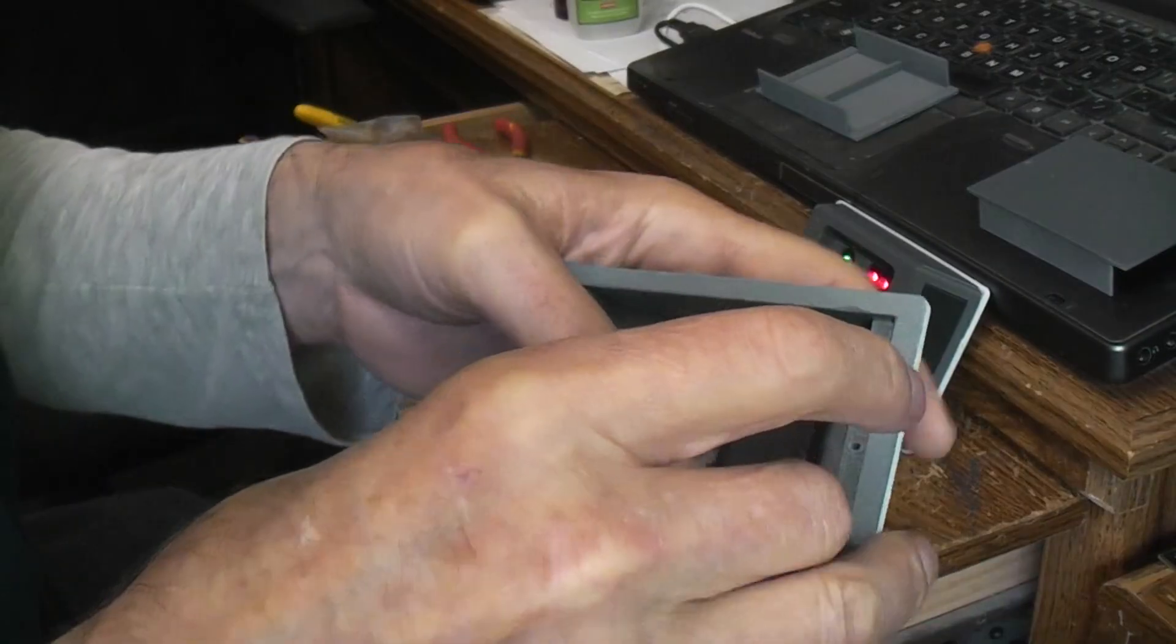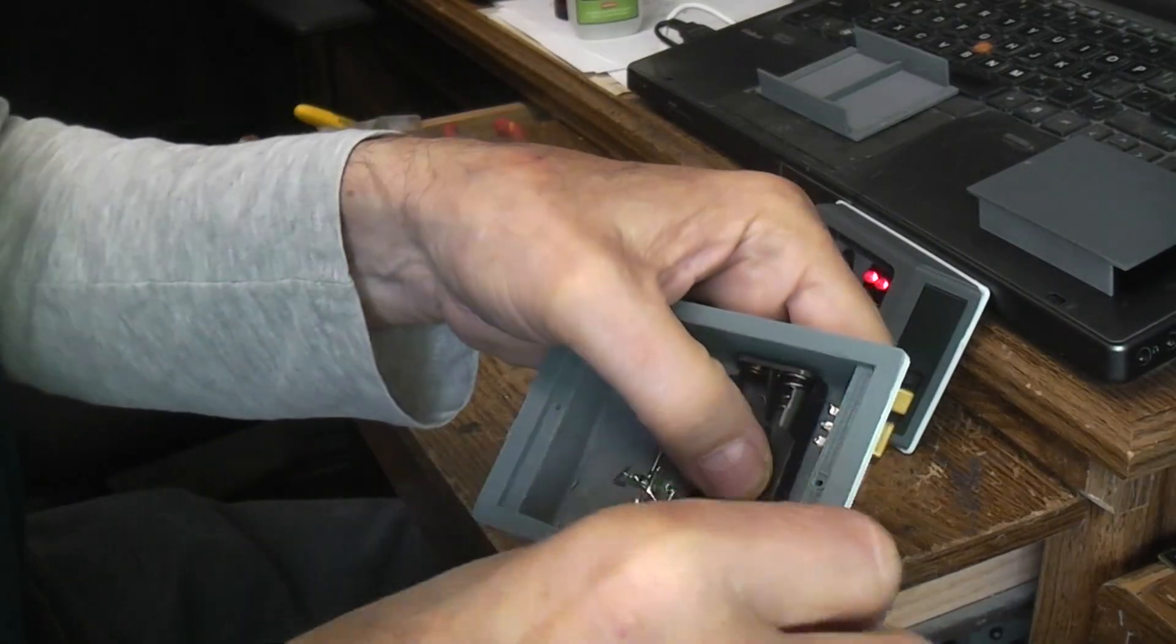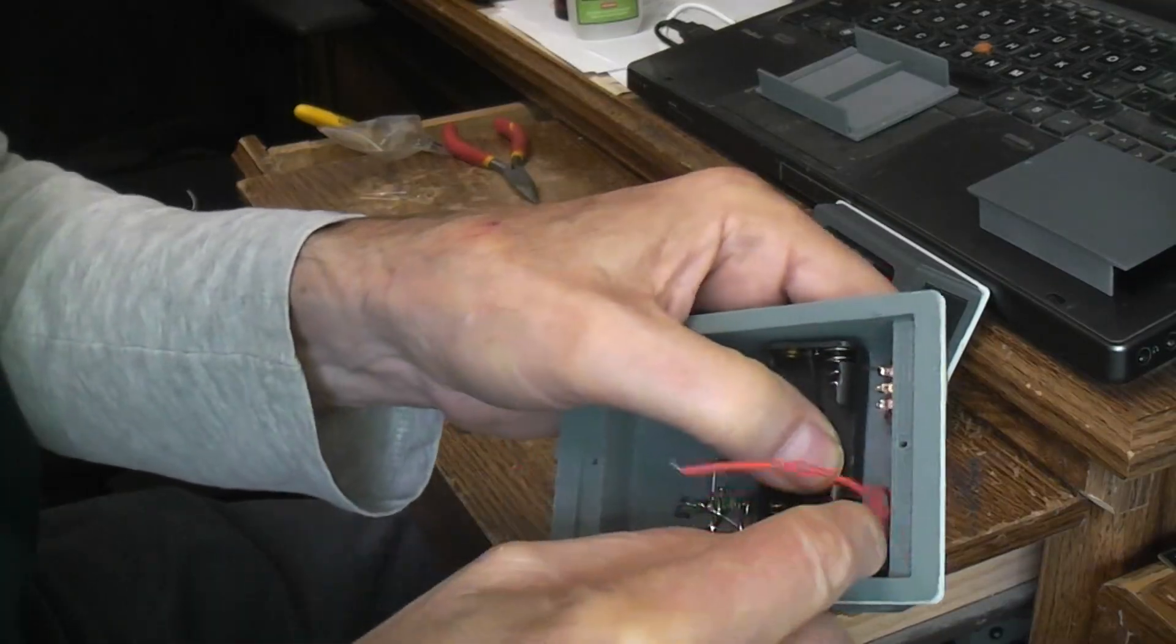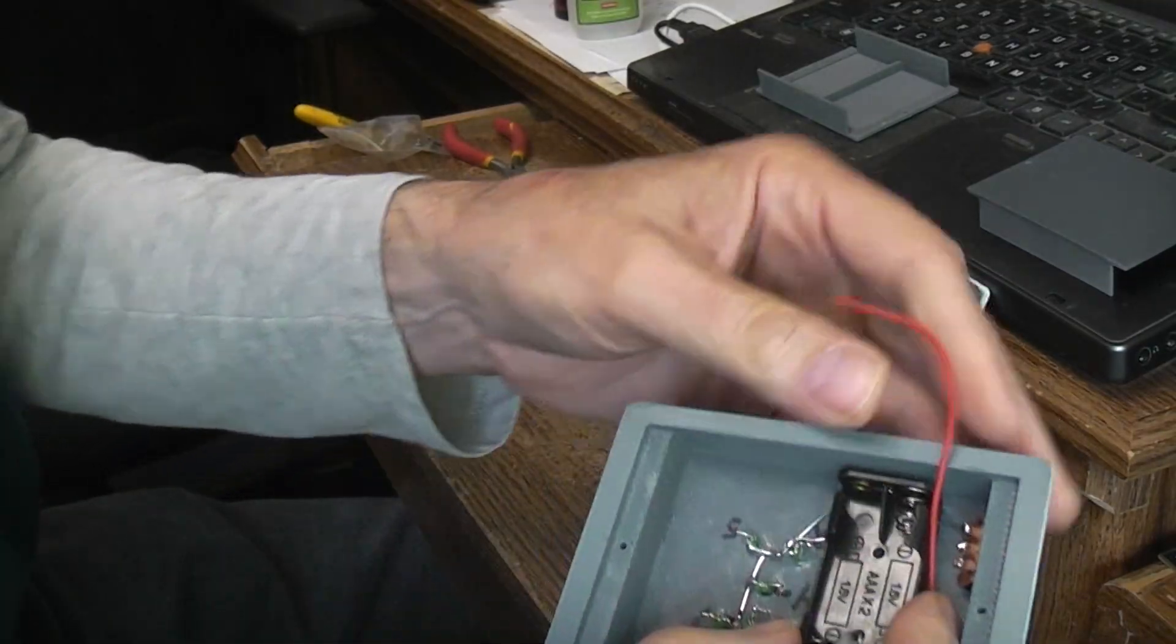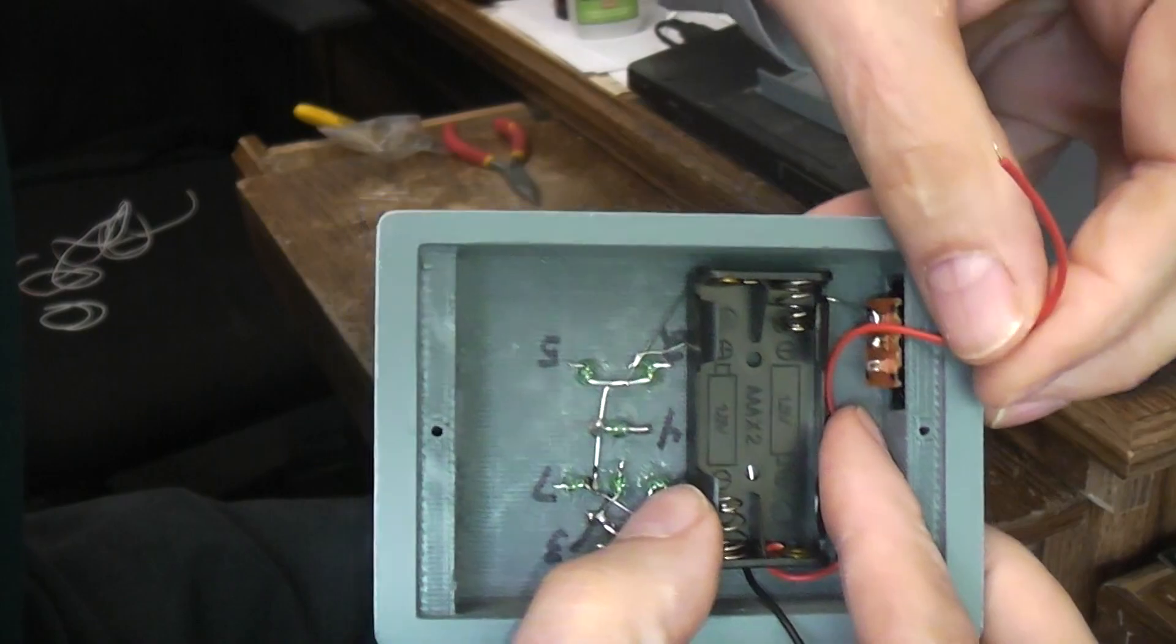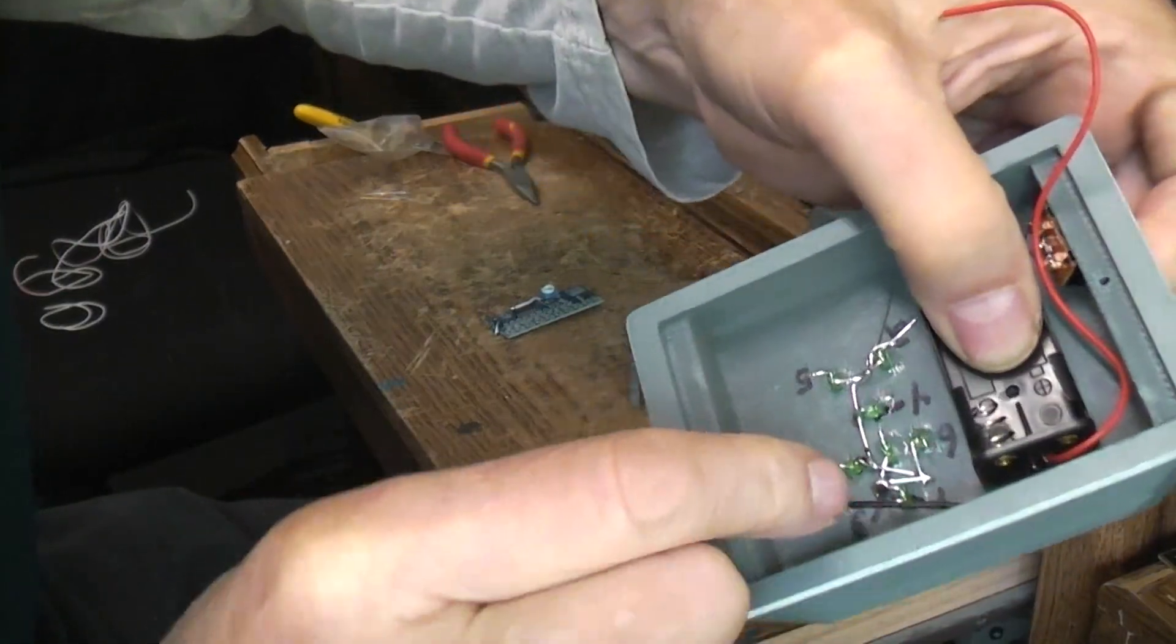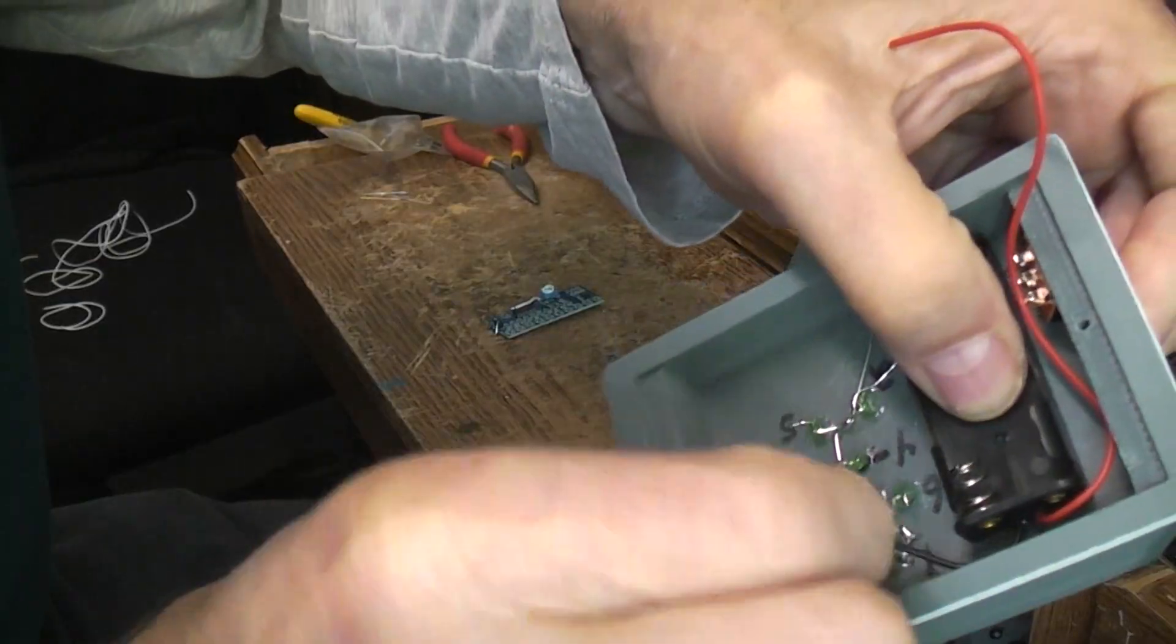Once that has set up, I'm going to take the leads from it and carefully super glue tack them down in place. The red one comes over to the switch and the black one I'm just going to route around.